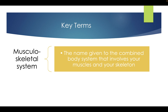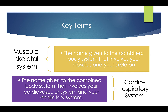Key terms: The musculoskeletal system is the name given to the combined body systems that involves your muscles and your skeleton. The cardio-respiratory system is the name given to the combined body systems that involves your cardiovascular system and your respiratory system.